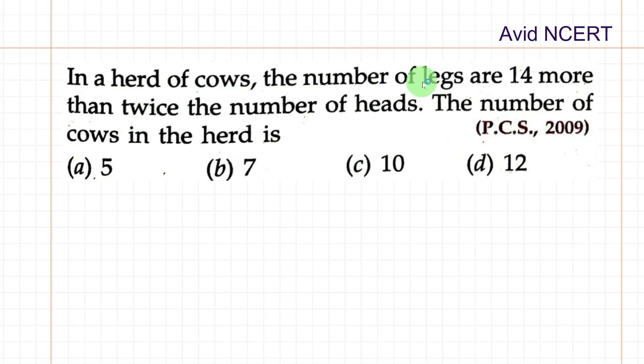In a herd of cows, the number of legs are 14 more than twice the number of heads. The number of cows in the herd is what we need to find.